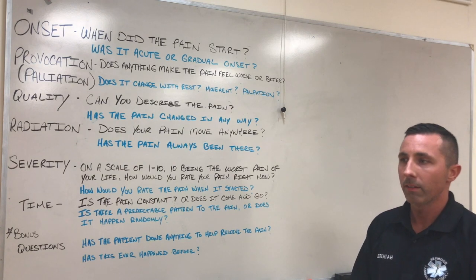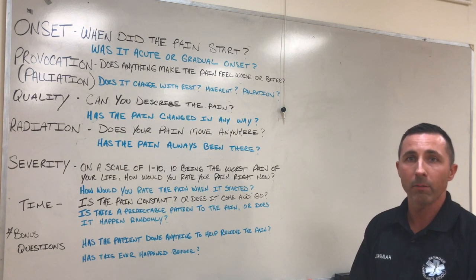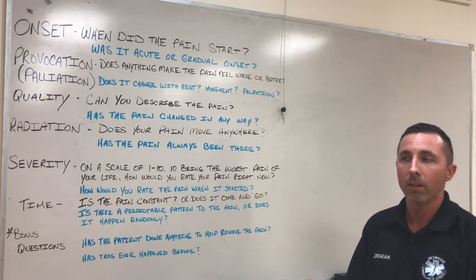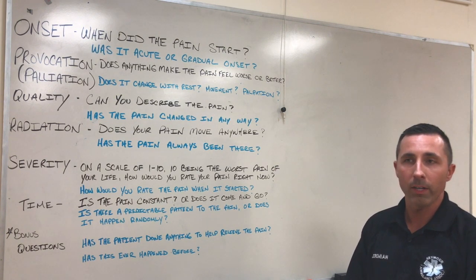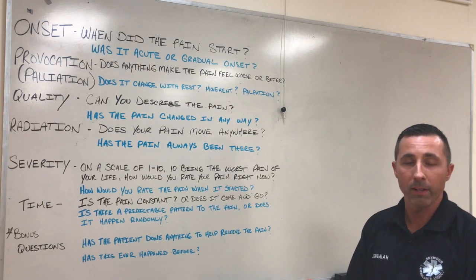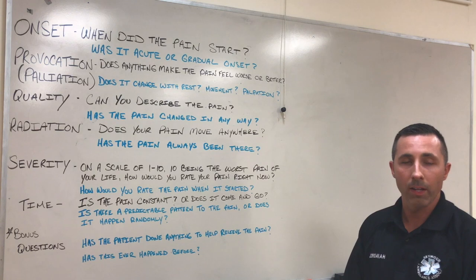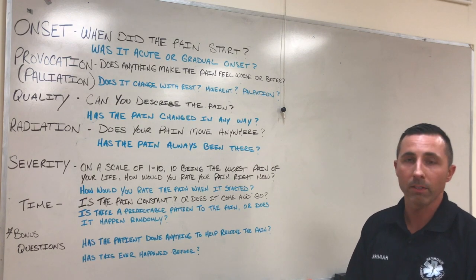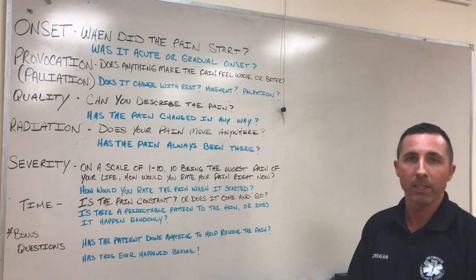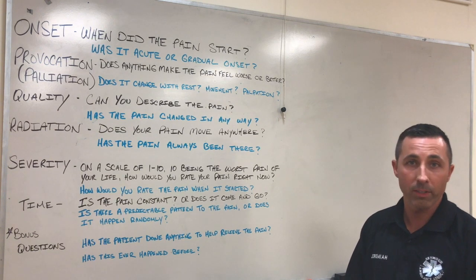S is for Severity. We want to ask the patient on a scale of one to ten — ten being the worst pain of the patient's life — what is their level of pain right now? A great clarifying question to ask would be: on a scale of one to ten, ten being the worst pain of their life, what was their level of pain when it started? This is important because it's going to help us determine if the pain or the patient's condition has worsened, improved, or is unchanged.